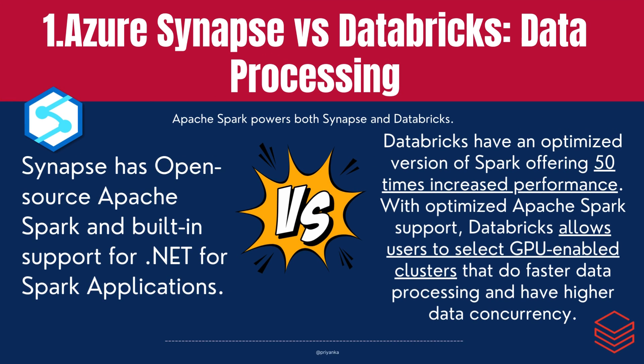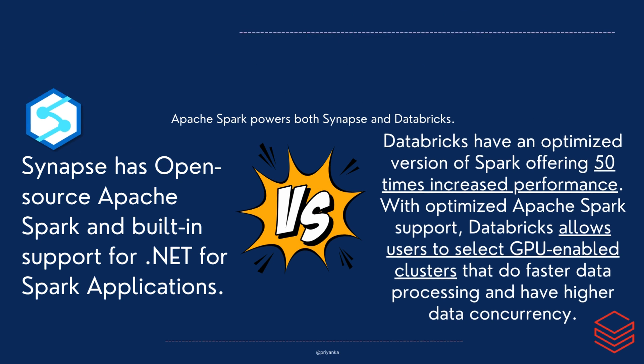The first difference is in data processing. Apache Spark powers both Synapse and Databricks. While Synapse has an open-source Spark version with built-in support for .NET applications, Databricks has an optimized version of Spark offering 50 times increased performance. With optimized Apache Spark support, Databricks allows users to select GPU-enabled clusters that do faster data processing and have higher data concurrency.